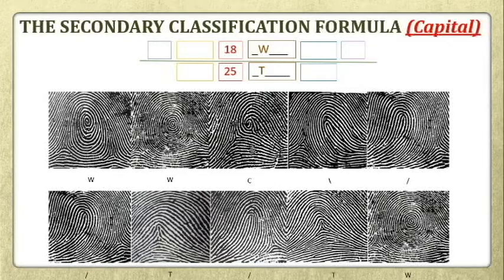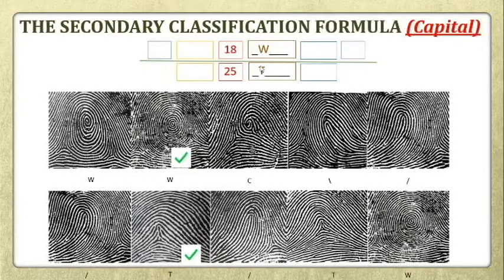The secondary classification formula for the capital letter group concerns fingers number 2 and 7. For example, if finger number 2 is a plain whorl, then the numerator will be W. And if finger number 7 is a tented arc, it will be represented by capital letter T. Make sure to leave a blank space on the left side of your capital letter group because it will be reserved for fingers number 1 and 6 during the secondary classification for the small letter group.